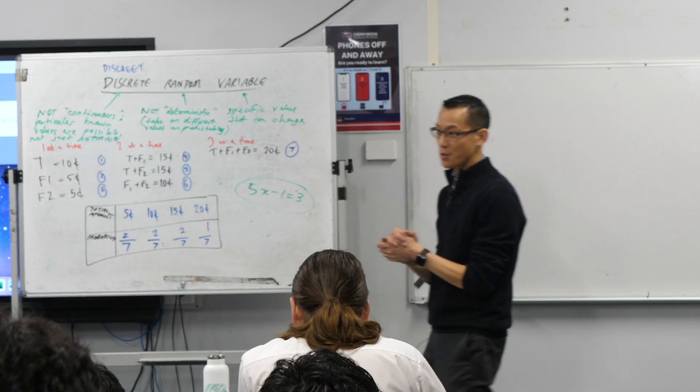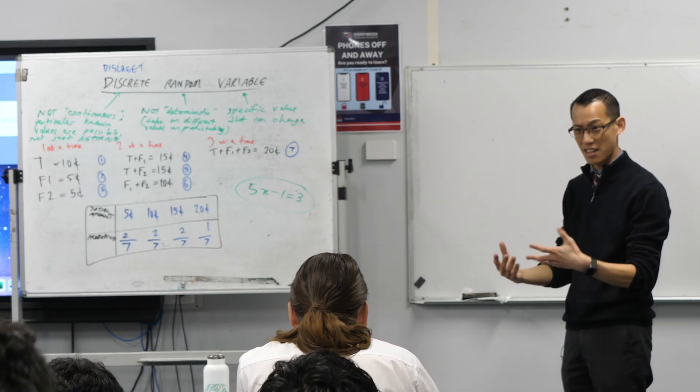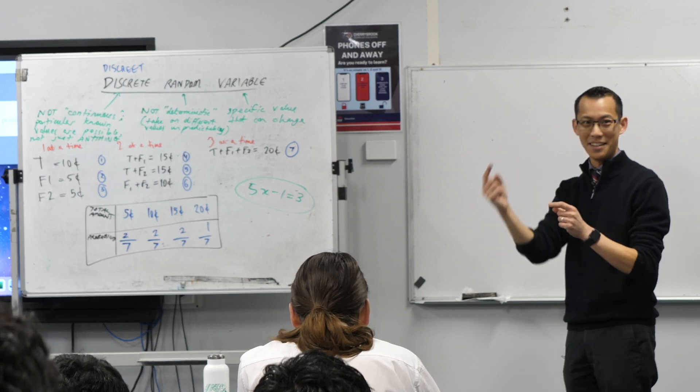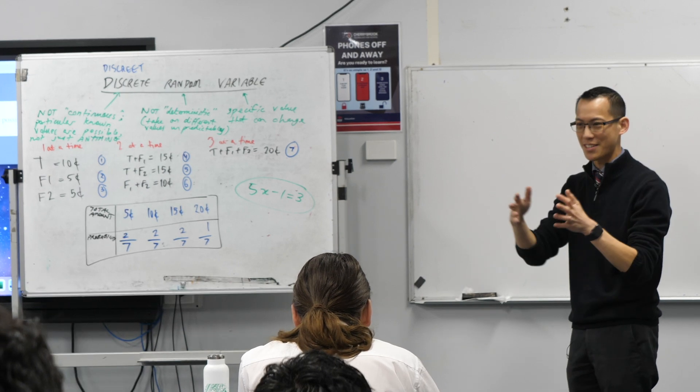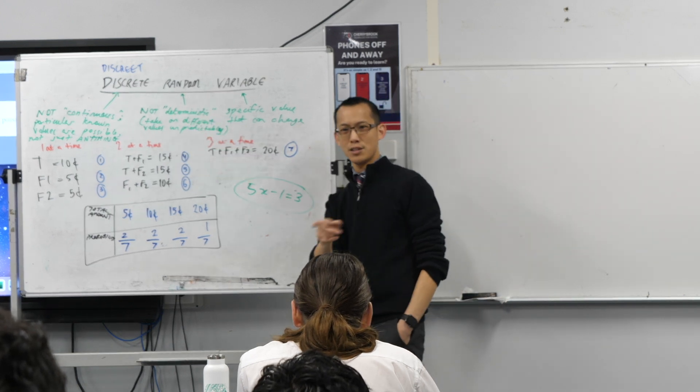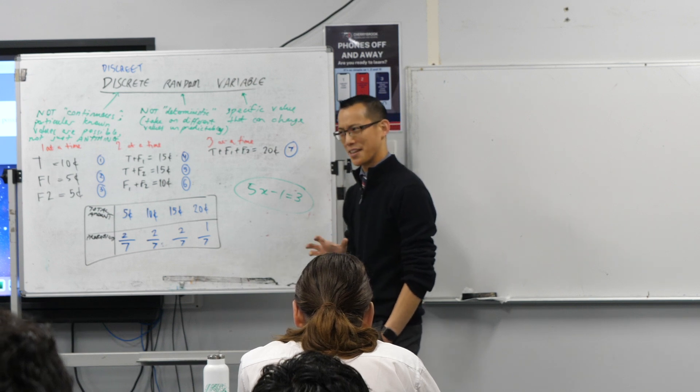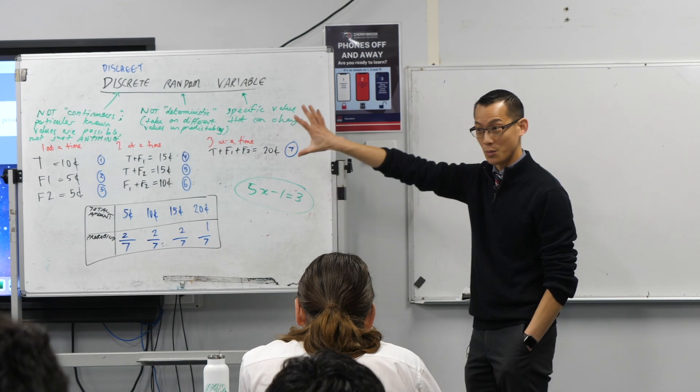We're not going to look at continuous random variables for quite some time because the maths required to understand them, it's going to take you, literally, 12 months to develop all of that stuff. So if you're like, oh, we're doing this one, are we going to do the next one? Just wait till year 12, you'll get there. But you have to learn some calculus, actually, before you can handle that. So we'll put that to one side.